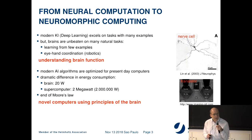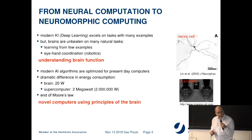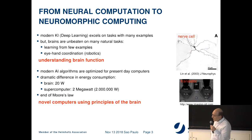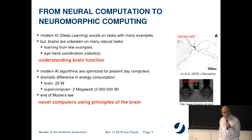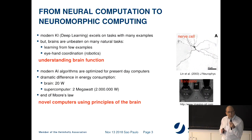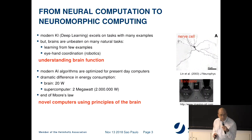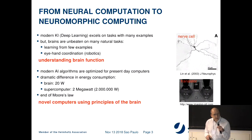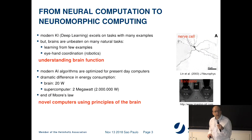It is presently unclear where this discrepancy comes from. Another constraint is that the end of Moore's law seems to be approaching. Moore's law is not a law of nature, but has held true for the last decades — every few years, the number of transistors you can place on a square millimeter of substrate has doubled. But this is no longer the case. The idea would be to derive from brain science principles that can be used for building novel computers.